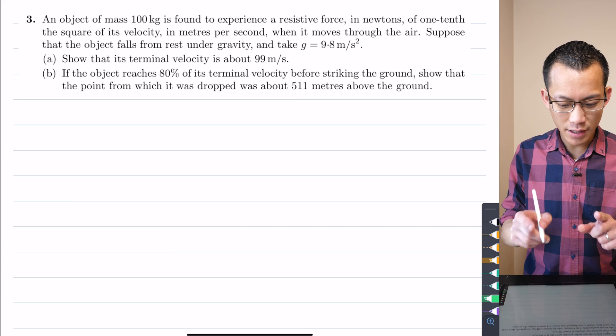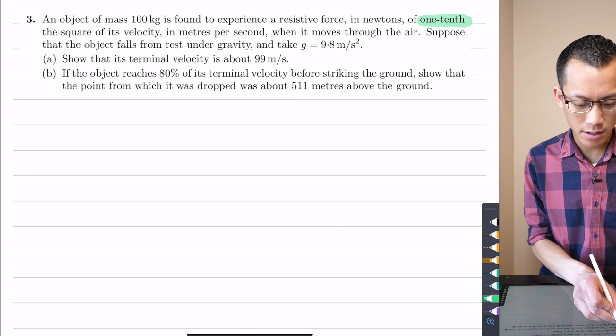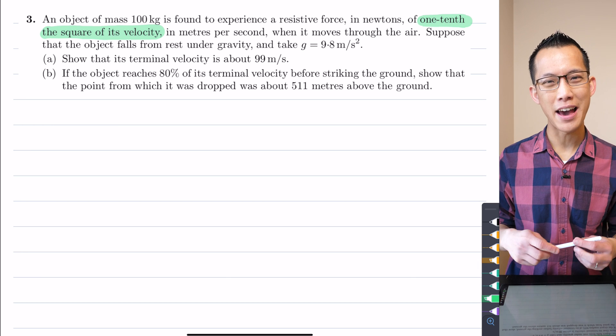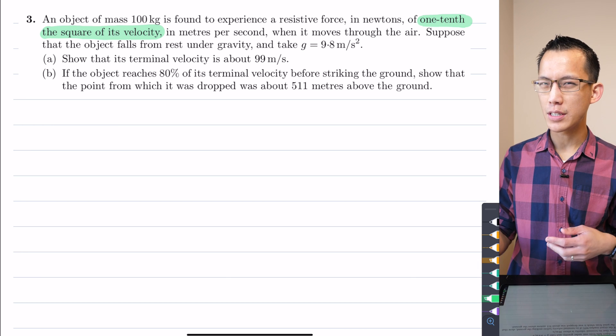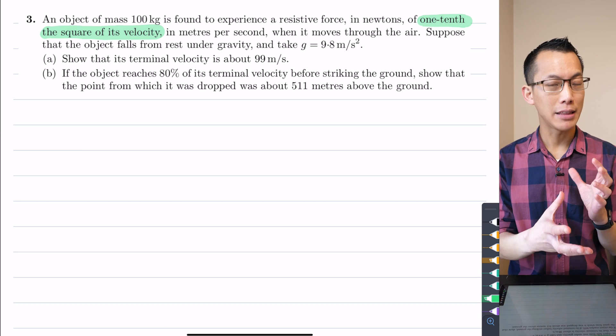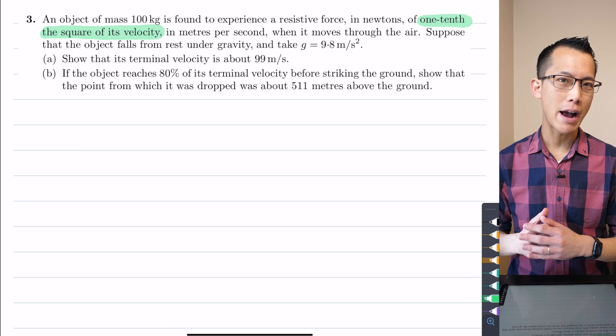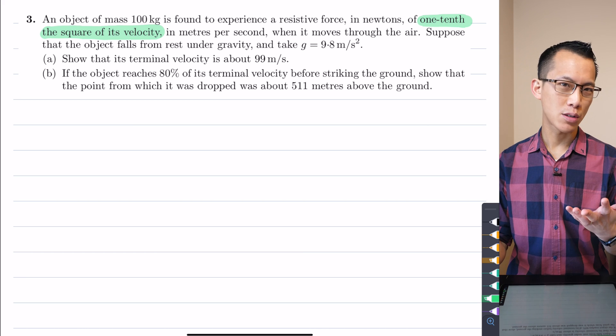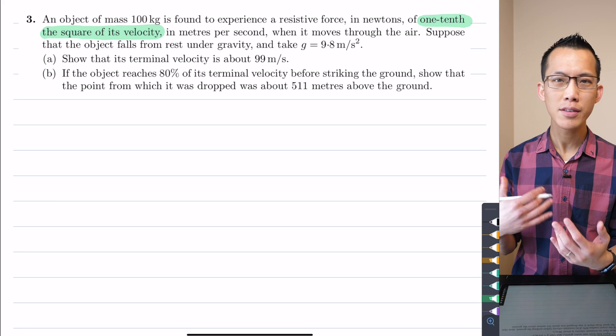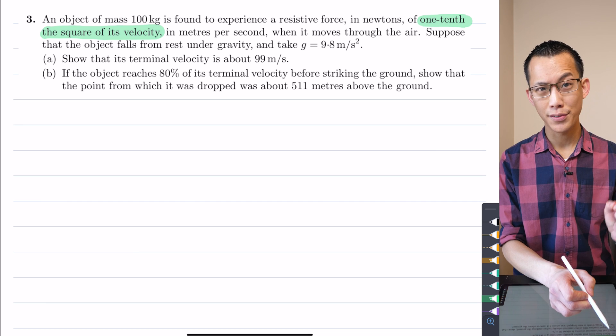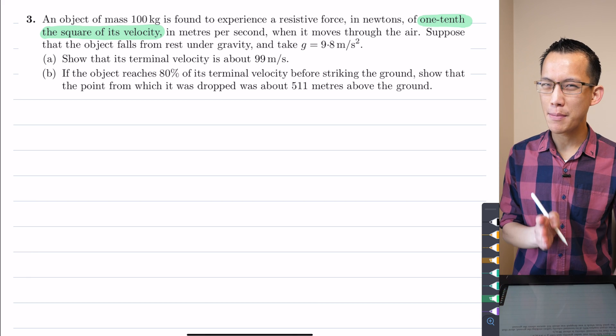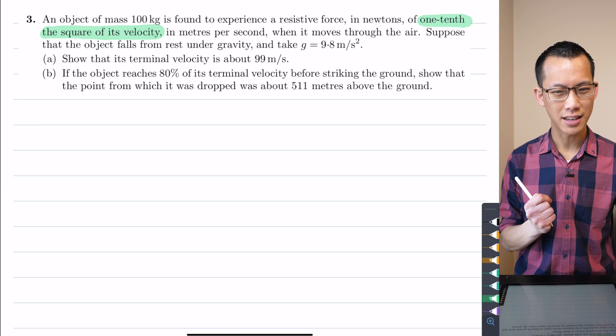That phrase you just read, the resistive force in newtons of one-tenth the square of its velocity, is the first place where I want you to pause. There's two key differences here to what we've had a look at previously. Number one, when we think about resistive force, things like air resistance, aerodynamic drag, we always know that these are in proportion to something related to the velocity because the faster you're going the more drag you are experiencing. However, we've seen so far examples where it's simply some constant proportion of just the velocity on its own. Here it's not just the velocity, it's the square of its velocity. So when we think about the difference of the equation that's going to come out of this, it's not just going to be a v, it's going to be a v² that we need to think about.